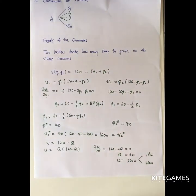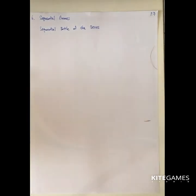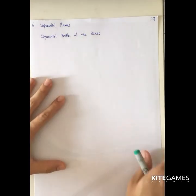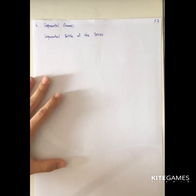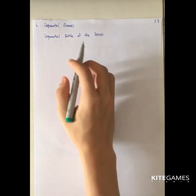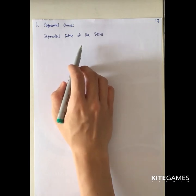We have finished simultaneous game theory. Next, we will go to the sequential game. A sequential game means that players' actions are not made simultaneously — one player makes the decision first while the other makes the decision later. Let's introduce how to solve these games using the battle of the sexes example, where the wife makes the decision first and the husband decides later.